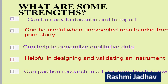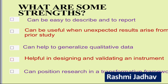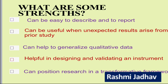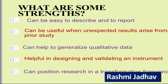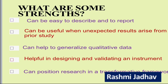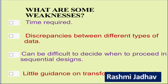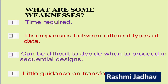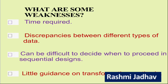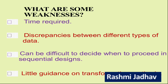Let's learn about the strengths and weaknesses of mixed method designs. Strengths: it can be easy to describe and report; it can be useful when unexpected results arise from a prior study; it can help to generalize qualitative data; it is helpful in designing and validating an instrument; and it can position research in a transformative framework. Weaknesses: it is a time-consuming process; there may be discrepancy — lack of similarity — between different types of data; it can be difficult to decide when to proceed in a sequential design; and there is little guidance on transformative methods, which some researchers may find difficult.